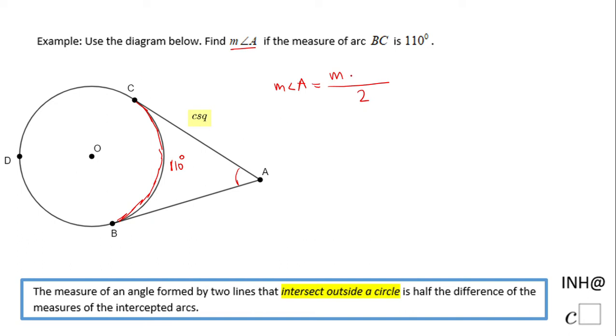The measure of arc BDC, which is this big arc - I used three letters to describe it - minus the measure of arc BC, which is given to us as 110 degrees.